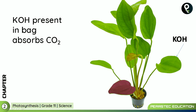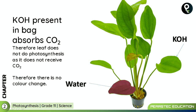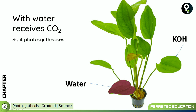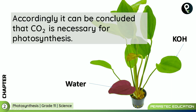Potassium hydroxide present in the bag absorbed the carbon dioxide. Therefore, that leaf does not do photosynthesis as it does not receive carbon dioxide. Potassium hydroxide absorbed all the carbon dioxide, so nothing happened in terms of photosynthesis and there was no color change. But the leaf in the bag with water received carbon dioxide, so it photosynthesized and a color change was observed. It can therefore be concluded that carbon dioxide is necessary for photosynthesis. Remember this experiment for your examination.